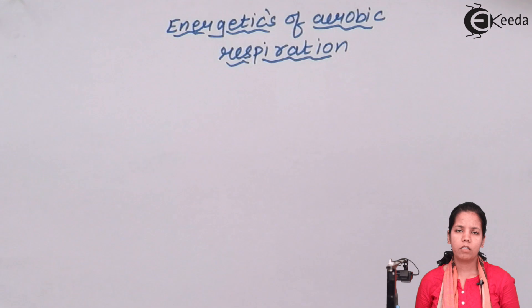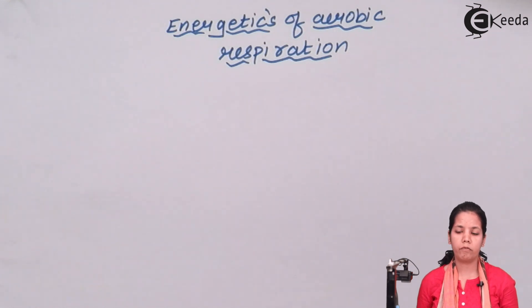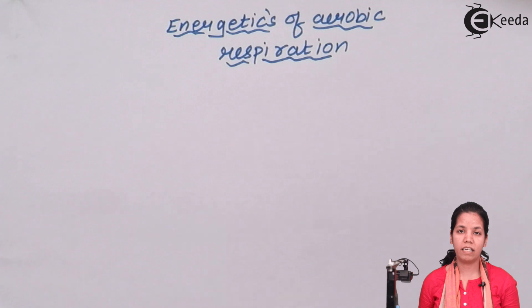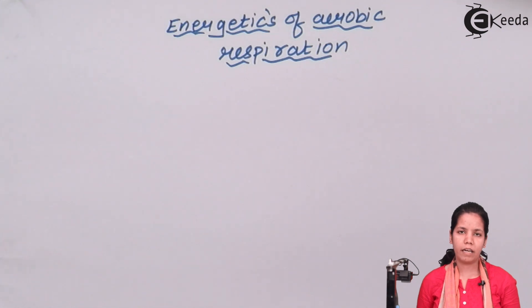Now let's talk about oxidative decarboxylation of pyruvic acid. The amount of ATP related to this step is 6 ATP molecules.